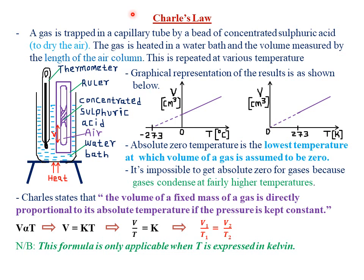Today we're looking at the second law, which is called Charles Law. It bears the name Charles Law because this particular law was first formulated in the year 1780 by a French physicist by the name Jacques Charles. Because of his second name, Charles, it was named the Charles Law.